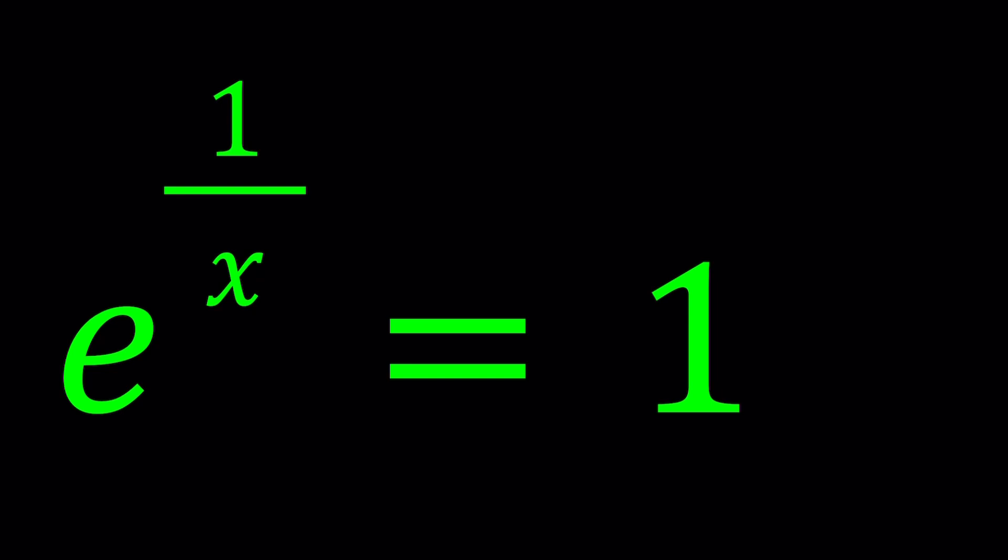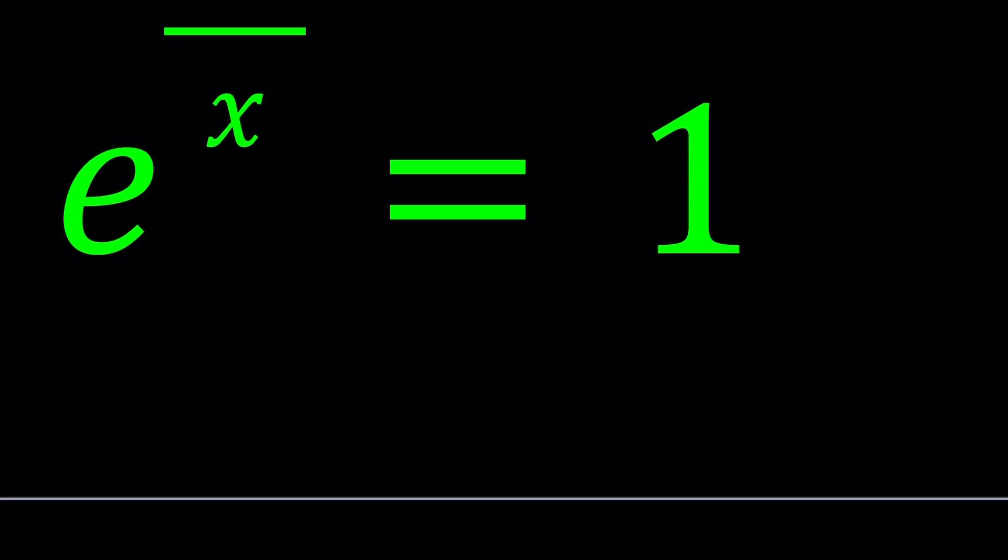So first of all, I want you to observe that e to the power 0 is equal to 1. For real numbers, e^0 equals 1. And I also made a video on 0^0, so in general, x^0 equals 1, even when x equals 0.